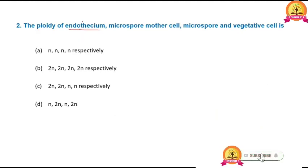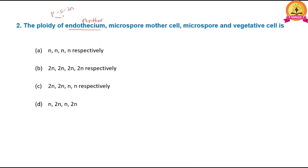Endothecium is a part of the anther. The plant body is a sporophyte, which is diploid. Since the plant is diploid, the flower is also diploid. The flower is part of the stamen, so the stamen is diploid. The anther is part of the stamen, so the anther is also diploid. Endothecium is part of the anther, so endothecium is also diploid.